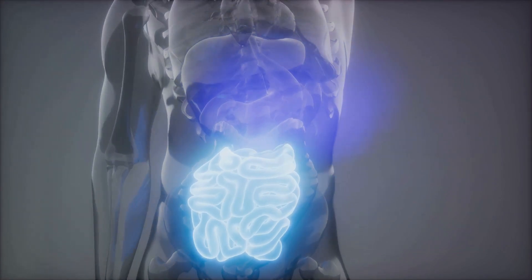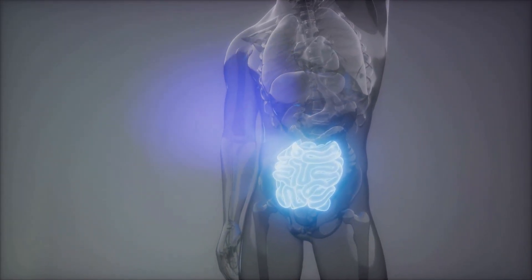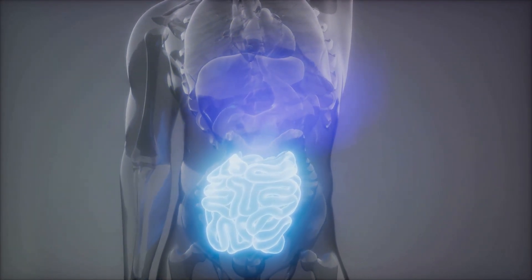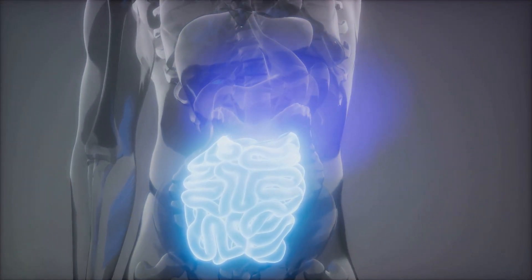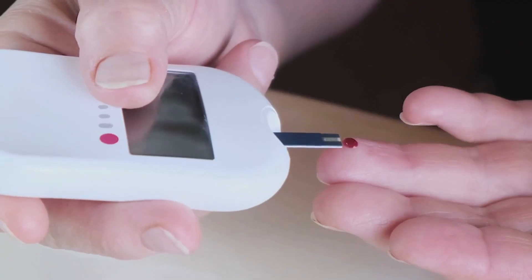The fifth impact is amyloid deposition. In individuals with type 2 diabetes, amyloid proteins can accumulate in the pancreas, interfering with beta cell function. This protein buildup can disrupt the normal workings of the beta cells.